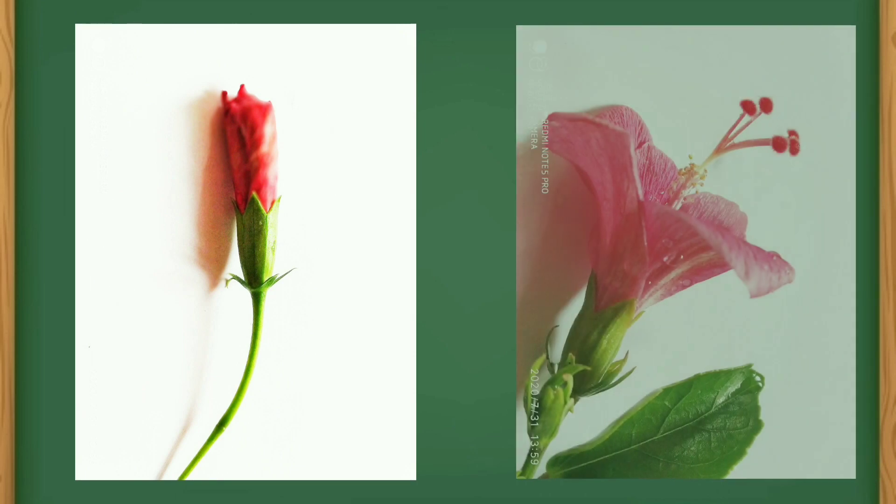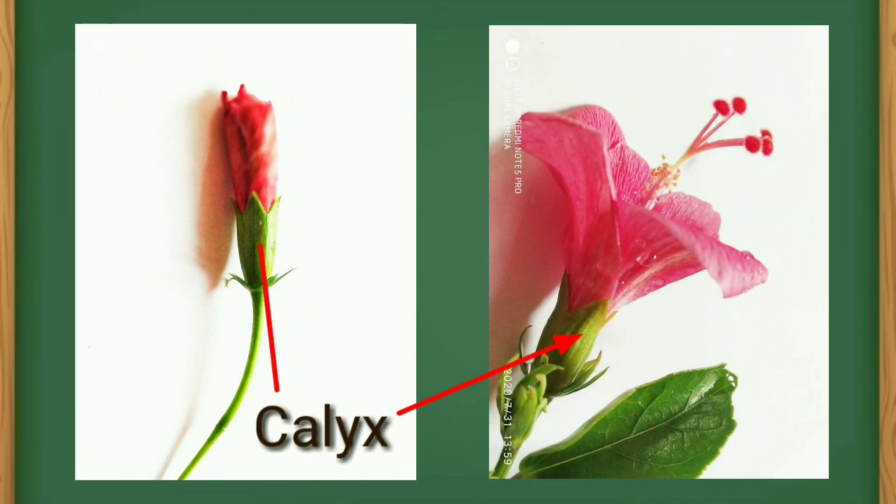Let us see the first part of the flower is calyx. Calyx is the outermost whorl of the flower, green in color and protective in nature.